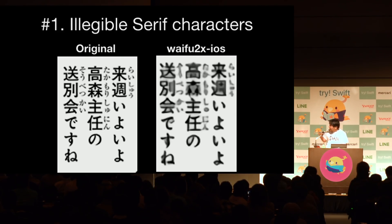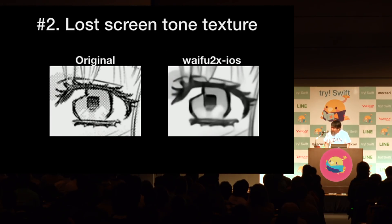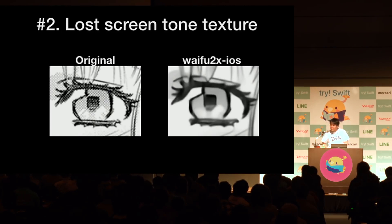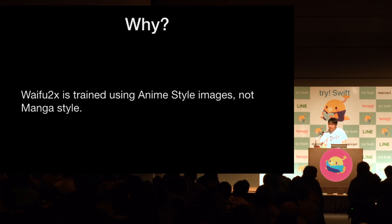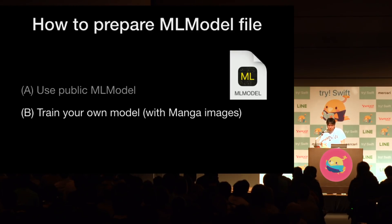First problem: illegible text characters. Second problem: lost screen tone texture. Screen tone is a very important expression for Manga. Why? Because Waifu2x is trained using anime-style images, not manga-style images. So I tried to train my own model using manga images.